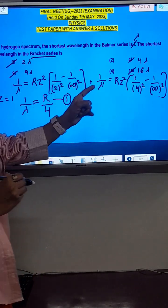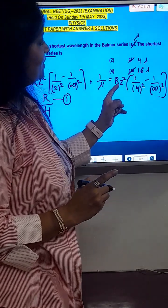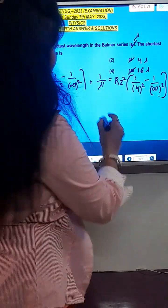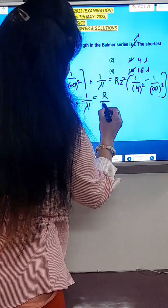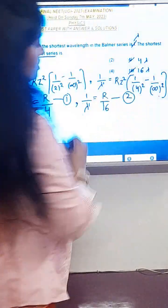Now bracket series, formula for bracket series is 1 upon lambda dash equals R Z square, 1 upon 4 square minus 1 by infinity square. So this becomes 1 upon lambda dash equals R upon 16. This is equation number 2.